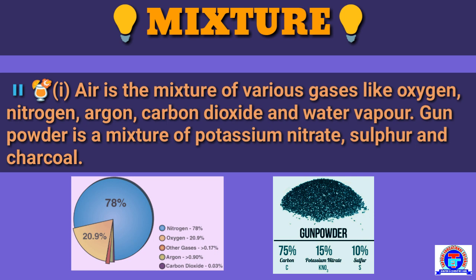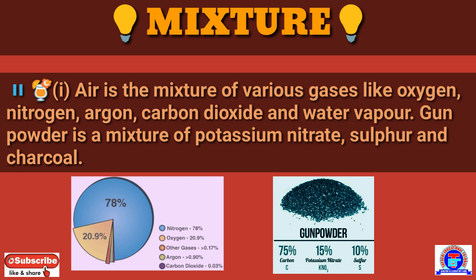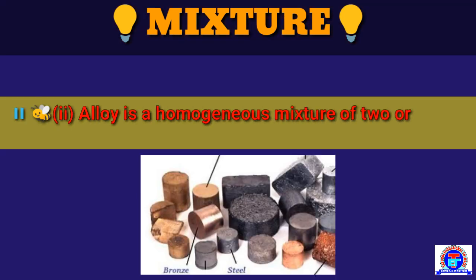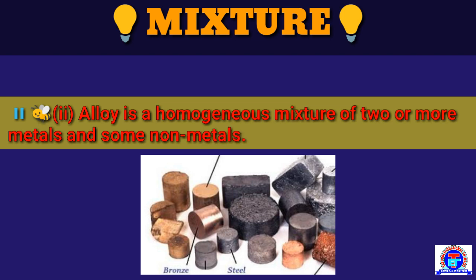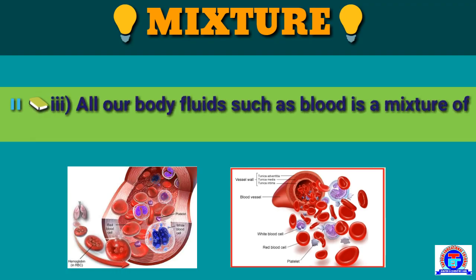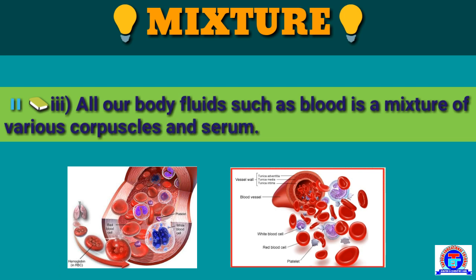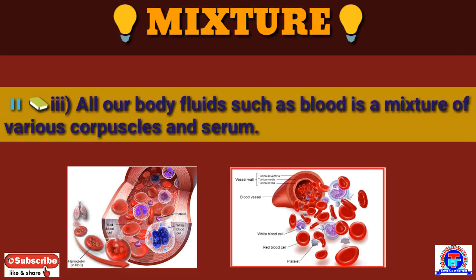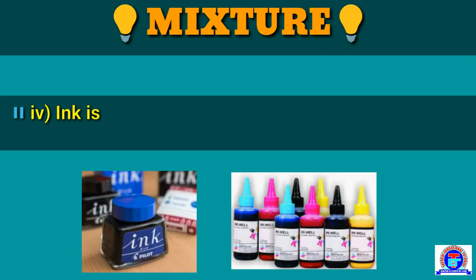Gunpowder is a mixture of potassium nitrate, sulfur and charcoal. Number 2: an alloy is a homogeneous mixture of two or more metals, and some non-metals may also be present. Number 3: all our body fluids — such as blood — are a mixture; various corpuscles and serum are present in the blood. Number 4: ink is a mixture of various chemicals along with some solvent.